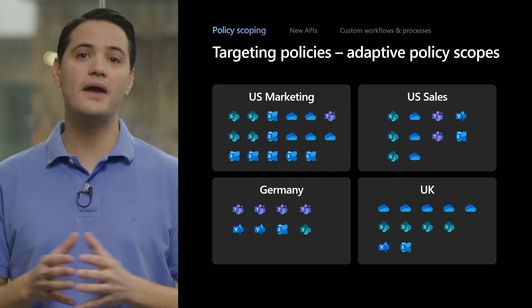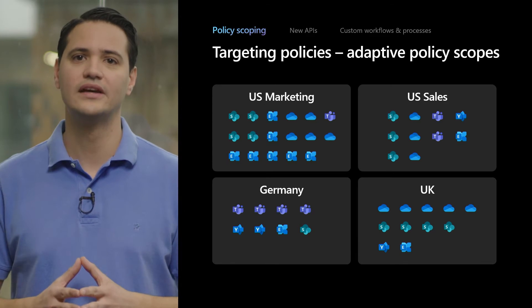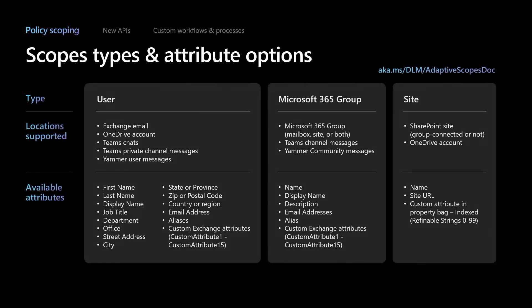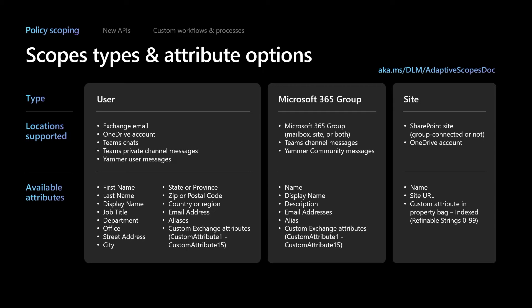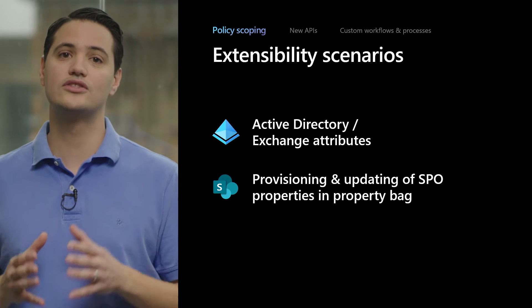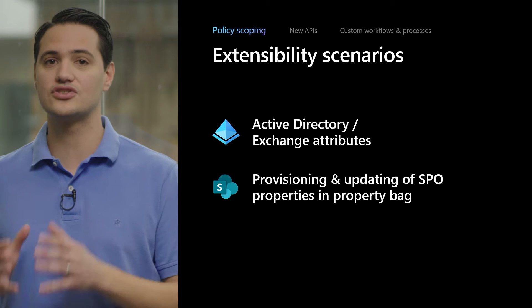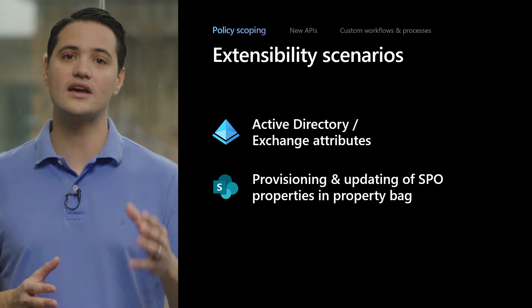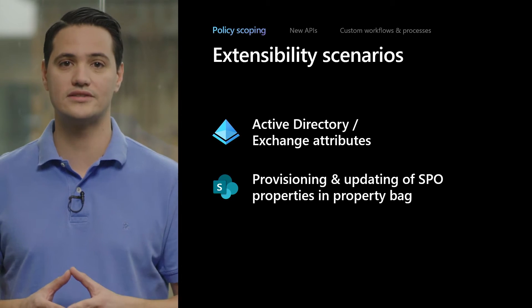You may ask: what does this have to do with me as a developer? All these scopes are based on attributes and metadata — whether from Azure Active Directory or Exchange when creating user and group scopes, or in the case of sites, key-value pairs stored in the site's property bag. Two great extensibility opportunities are to ensure that those Active Directory and Exchange attributes are always up to date in relation to changes in your organization.